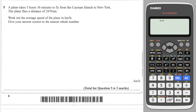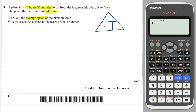We have a plane taking off — it flies a given distance and we're given the time, and it wants you to work out the average speed. We're going to need our speed-distance-time triangle: speed, distance, time. Because we are trying to work out speed, we cover speed and we need to do distance divided by time.